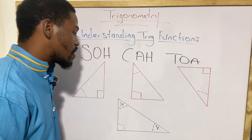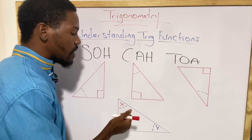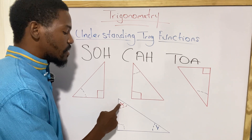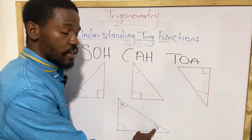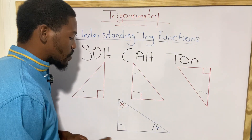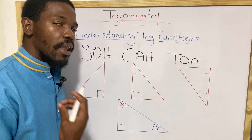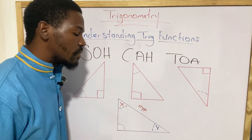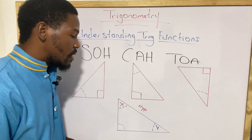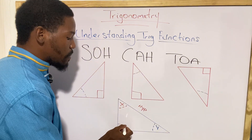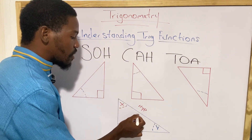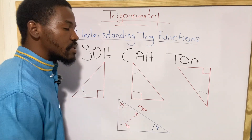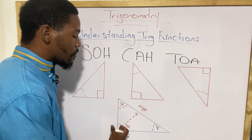In answering questions relating to right angle triangles, we need to know the names of each side. Looking at this diagram, we have theta represented as x and theta as y. The first thing to note is that the longest side is always the hypotenuse. The hypotenuse is always exactly opposite the right angle.